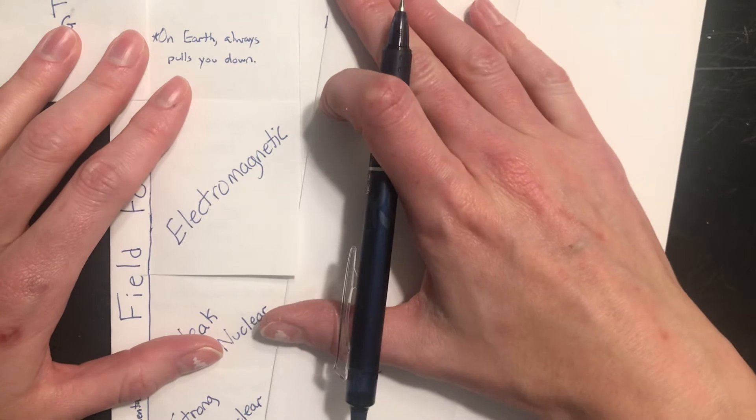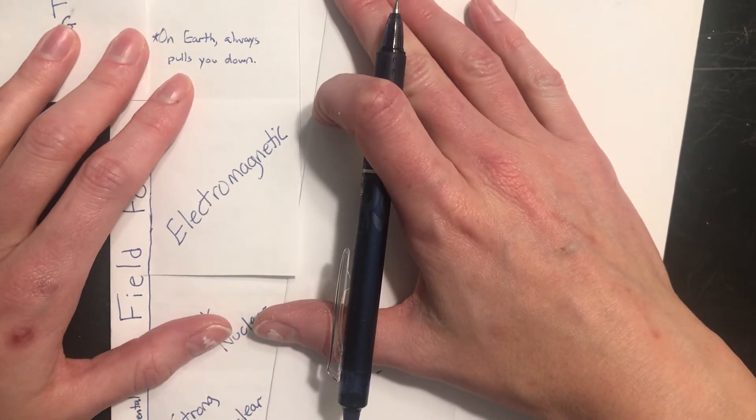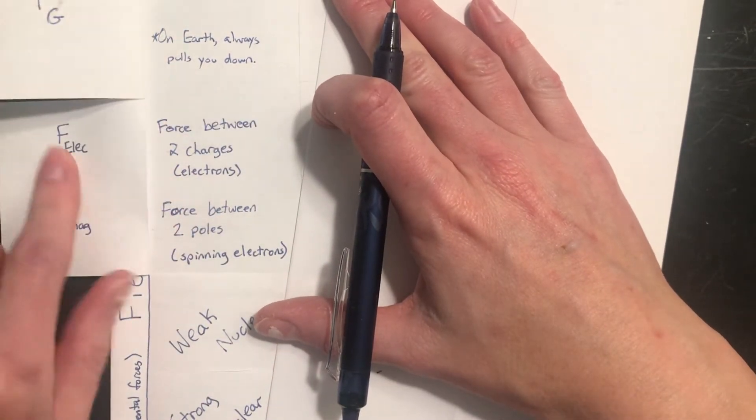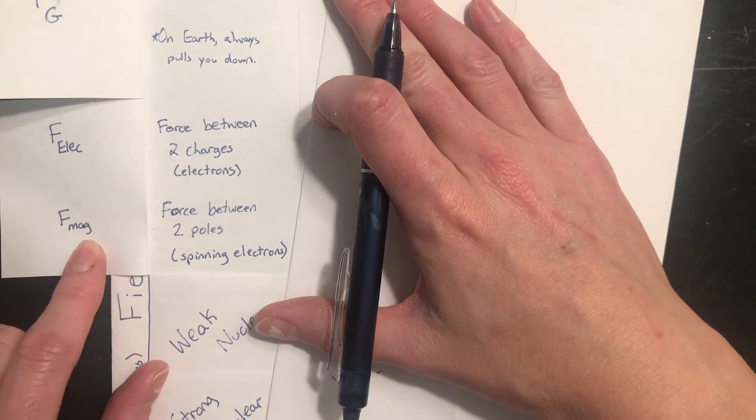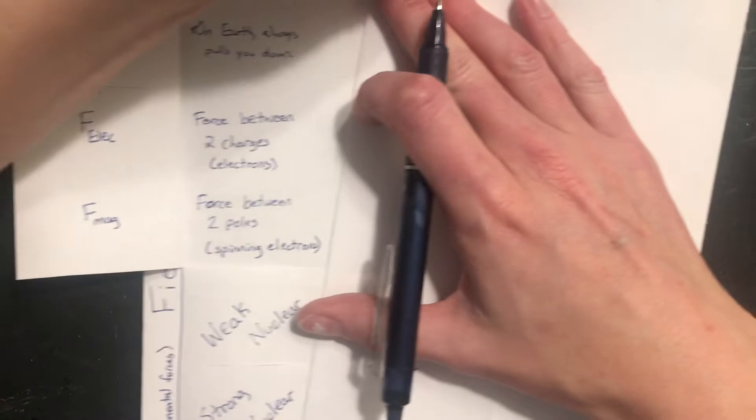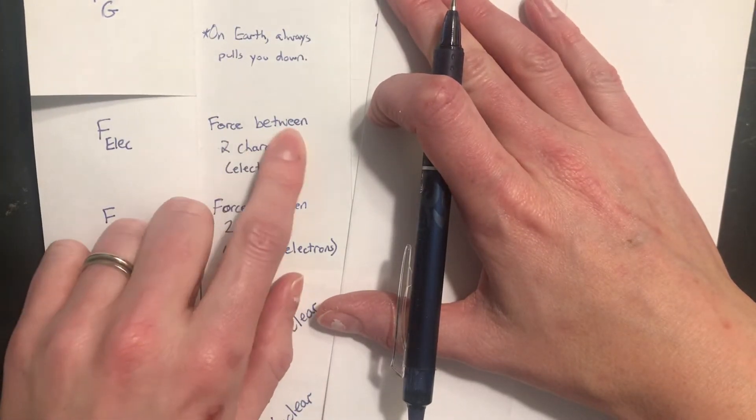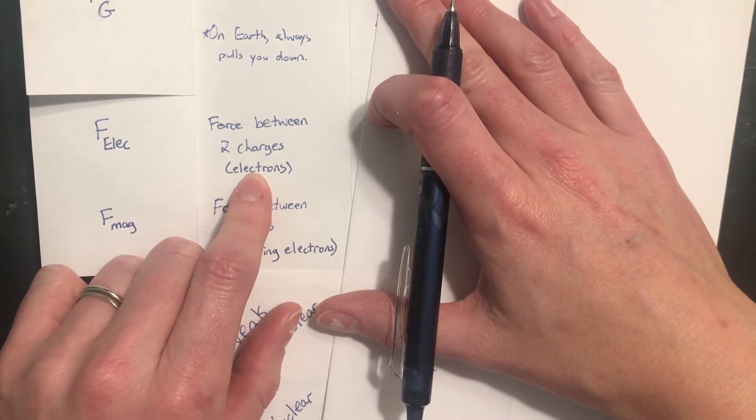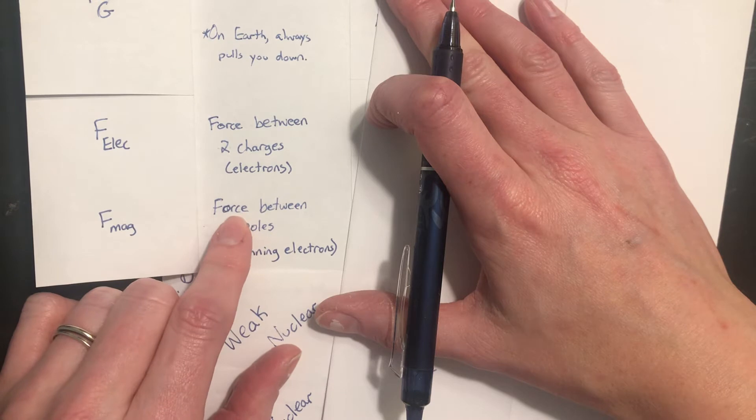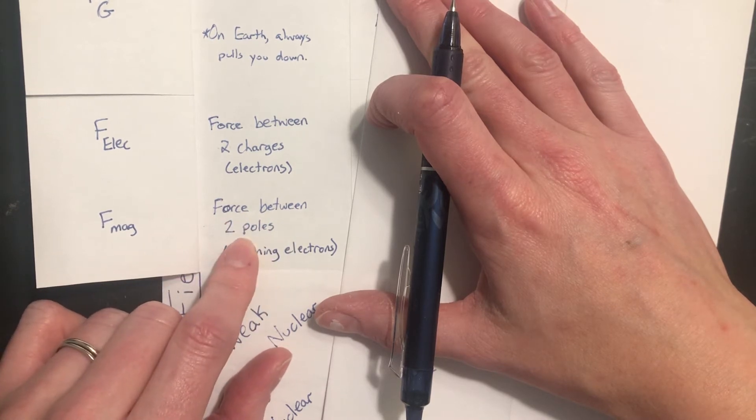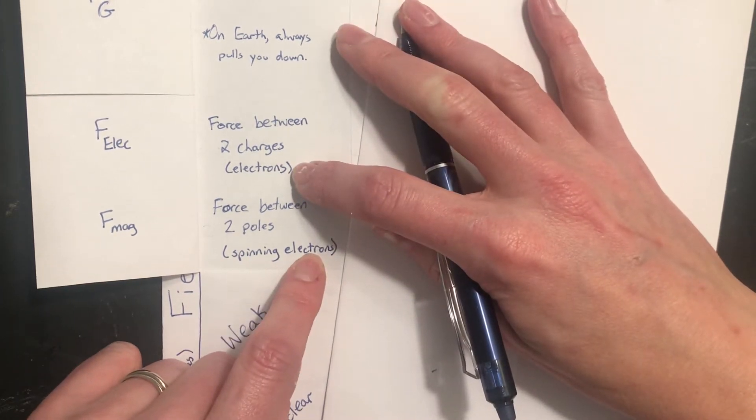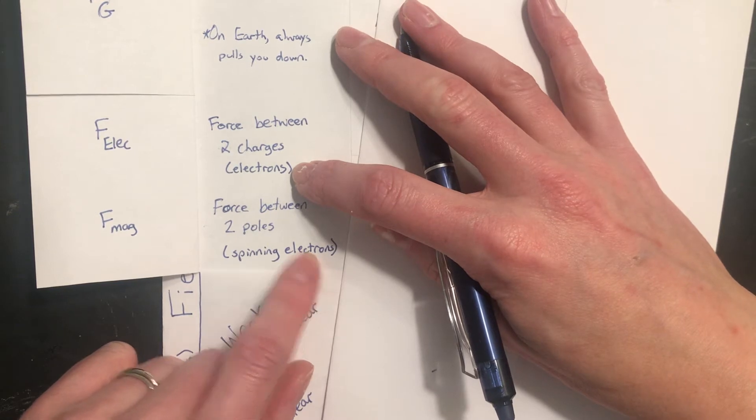Electromagnetic forces are really two separate forces, but it turns out they always go together, and you'll see why here in just a second. Electromagnetic forces are electric forces, F electric, and magnetic forces, F magnetic. And the reason they go together is because they are electric forces are the forces between two charges, which is electrons. Electrons are negatively charged and they push on each other, but they pull on positive charges. Magnetic charges are the forces between two poles, and those poles on a magnet are because of spinning electrons, so you can see they're both dependent on electrons. You really can't have one without the other, so that's why they go together.